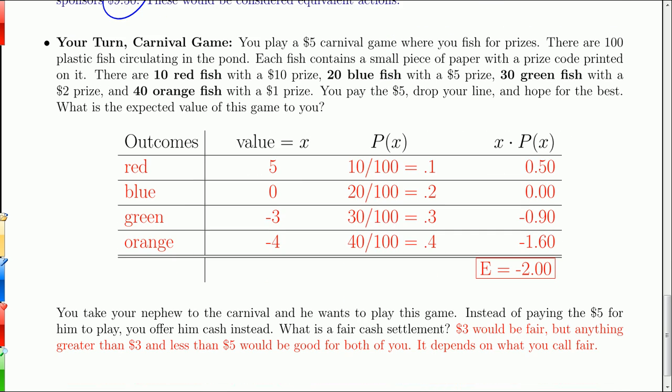If you want to do your turn, there's a carnival game. You pay $5 to play, and there's some fish in a little pool, and they go around and you try to catch one. There are 100 of these plastic fish. There are 10 red fish with a $10 prize. 20 blue fish with a $5 prize. 30 green fish with a $2 prize. 40 orange fish with a $1 prize. So you pay your $5, drop in your line, and hope for the best. You're just going to take the first one that happens to bump into your line. So it's a random selection.